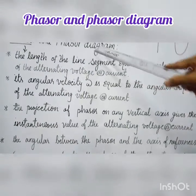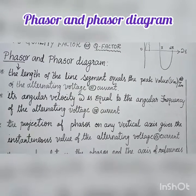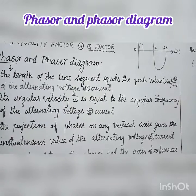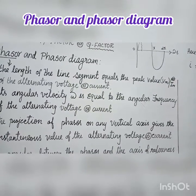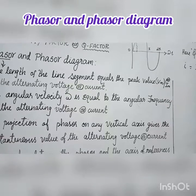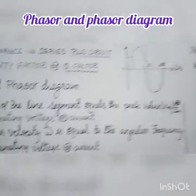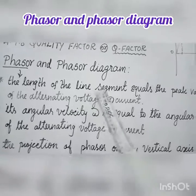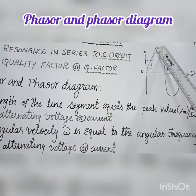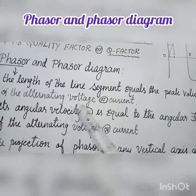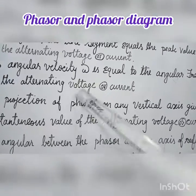Next topic: phasors and phasor diagrams. A phasor is a sinusoidal alternating voltage or current represented by a vector rotating in an anticlockwise direction at constant angular velocity ω. Such a rotating vector is called a phasor. A phasor is drawn such that: the length of the line equals the peak (maximum) value of voltage or current, and the angular velocity ω equals the angular frequency of the alternating voltage or current.